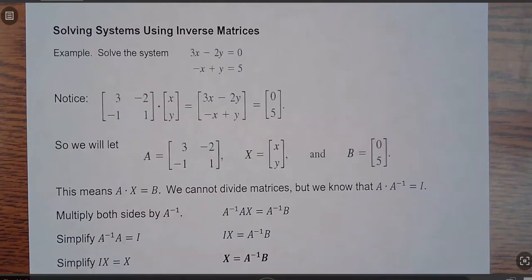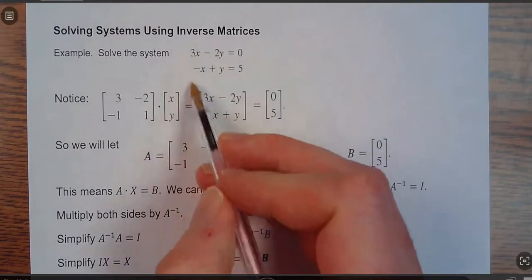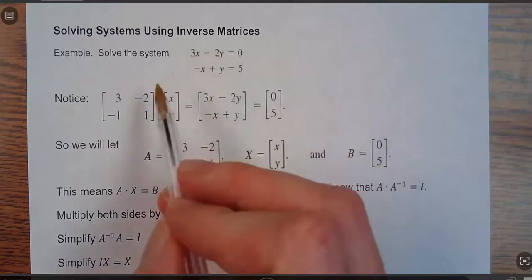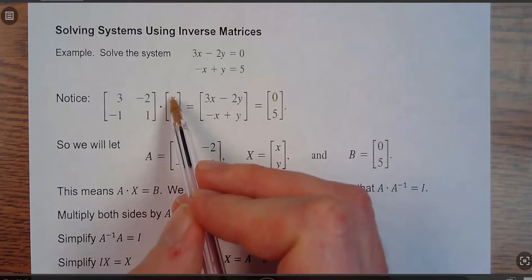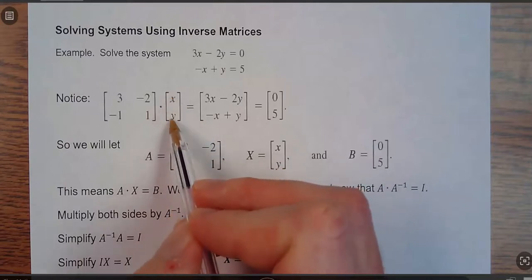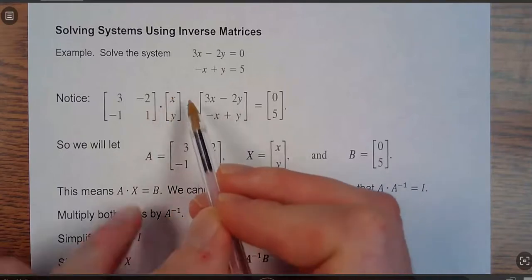So to start out with, just think about this guy right here. We could rewrite this. If I look at just the coefficients, I can make a coefficient matrix, and then say that if I multiply that by the matrix x over y, it would equal this, and that's true.